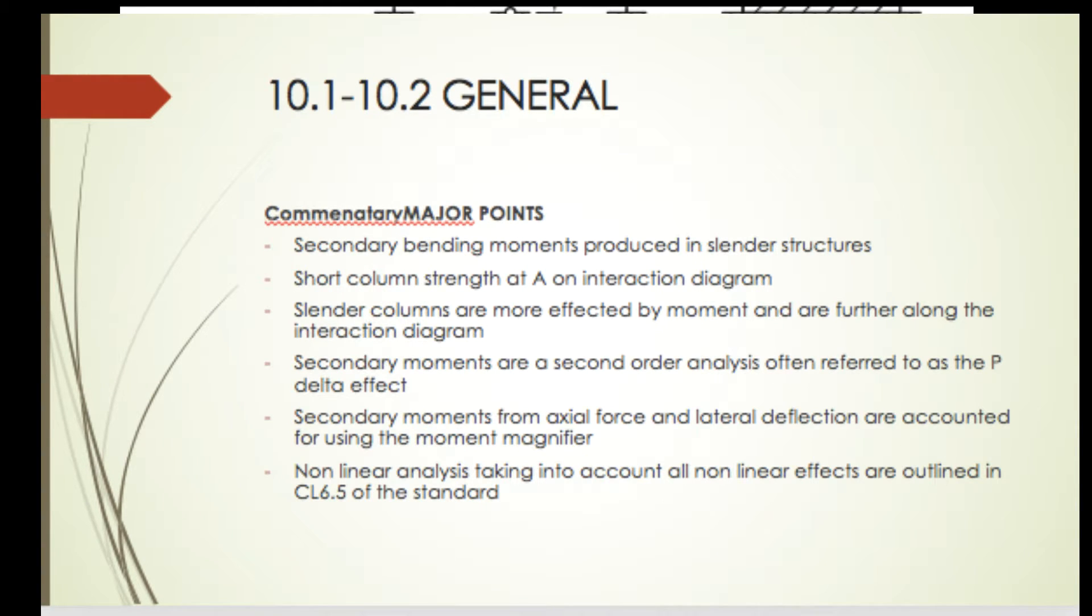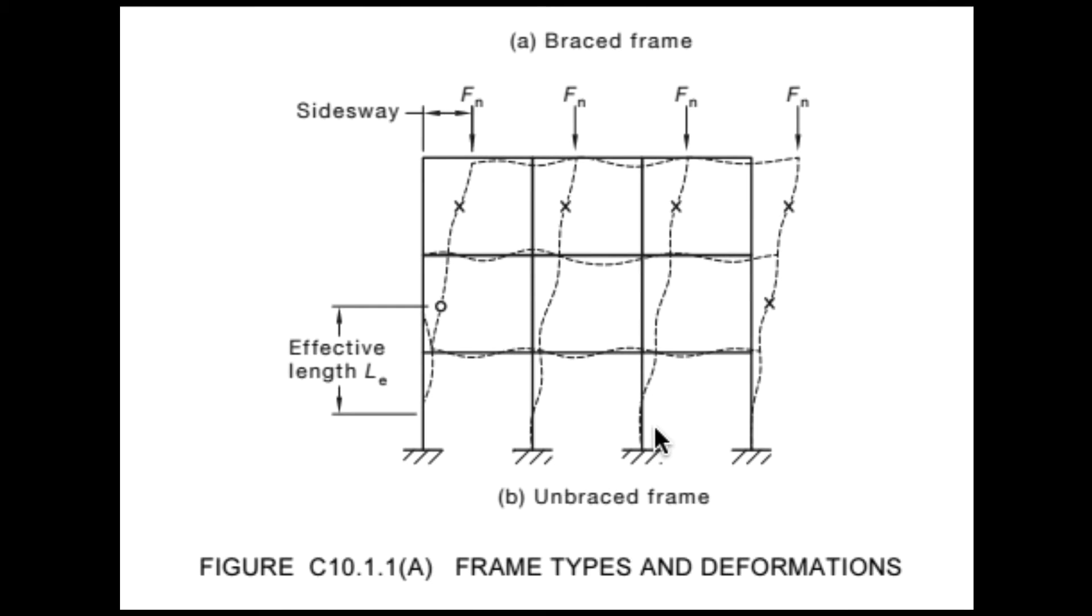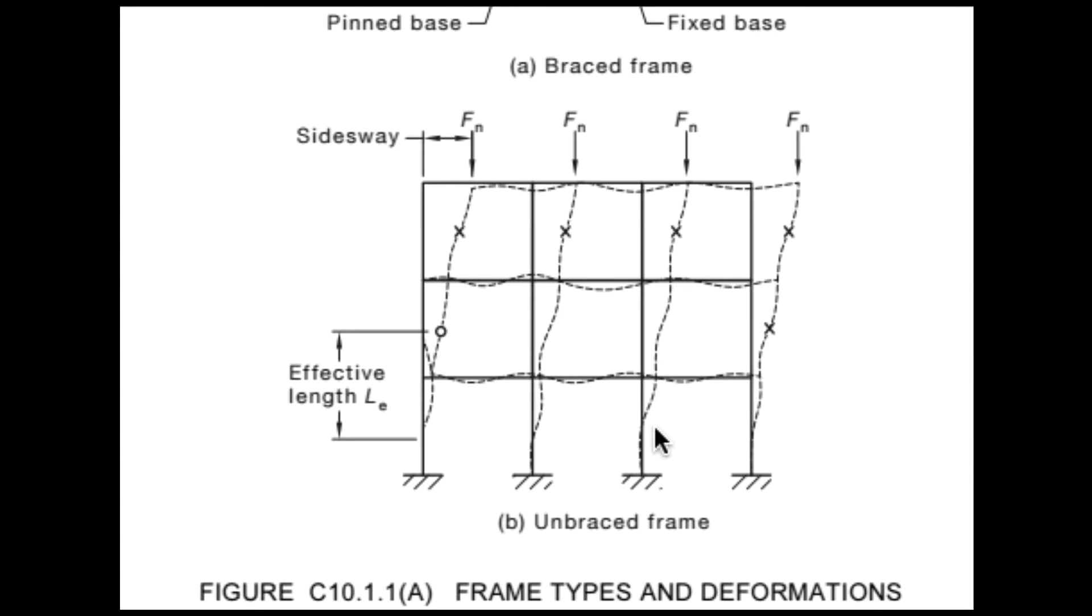So looking at the commentary in section 10.1 to 10.2, it says secondary bending moments are produced in slender structures. So for a slender structure, the building might sway a bit more as a whole, putting extra moments in the individual column, and that's where the moment modification factor may come in and account for these moments.